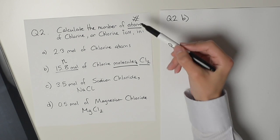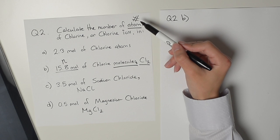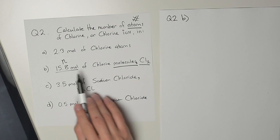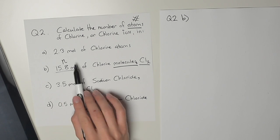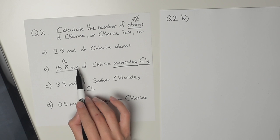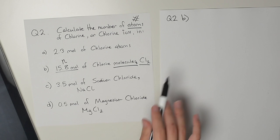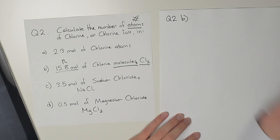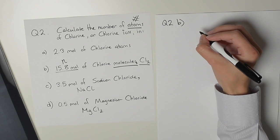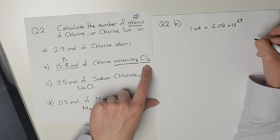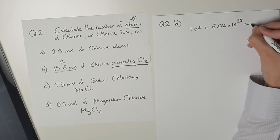Question 2b: Calculate the number of atoms of chlorine in 15.8 moles of molecules of chlorine. We do the same procedure as the previous example. In this case, we've got moles of molecules of chlorine, so I've got to write molecules.